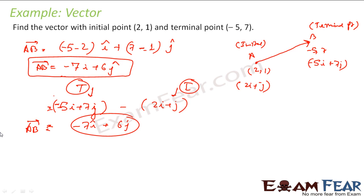Very simple — that is the convention you should know. When you say vector AB, a is the initial point, b is the terminal point, and you write terminal point minus initial point.